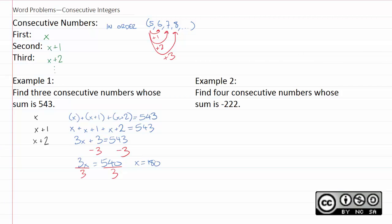But be careful. You're not quite done yet. 180 is the first of three integers. So our first integer is 180, our next one is 181, and our next one is 182. It's a good idea to check your answers. Try adding 180, 181, and 182 all together, and see if you do in fact get 543. You should.